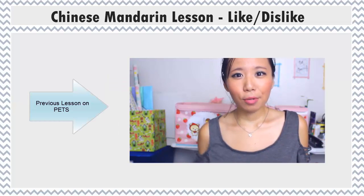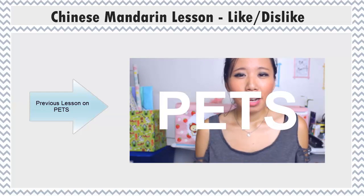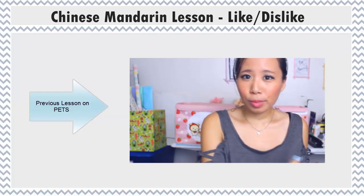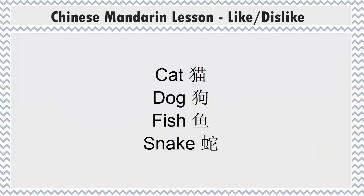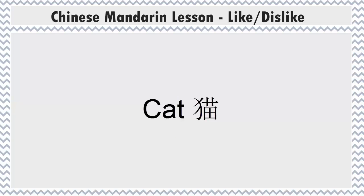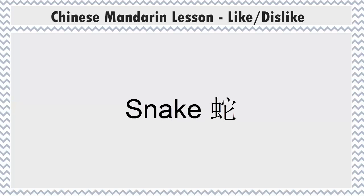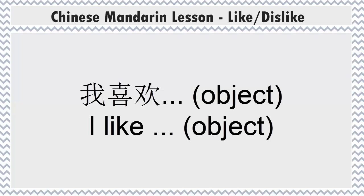In the previous lesson, we learned about pets. If you need a quick review, please check the link in the description for a video lesson. I'm going to go over the words really quickly here — I will only repeat the words once since we already covered that in a different lesson. 猫, 狗, 鱼, 蛇.